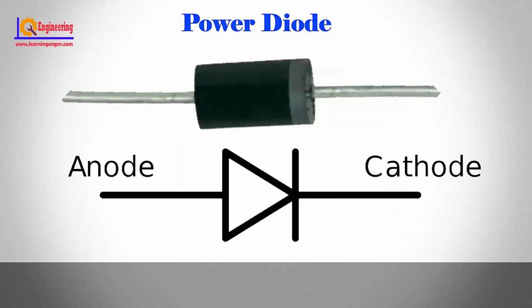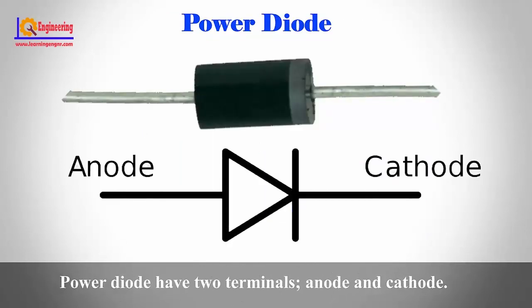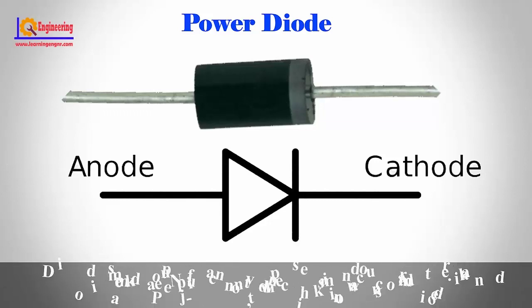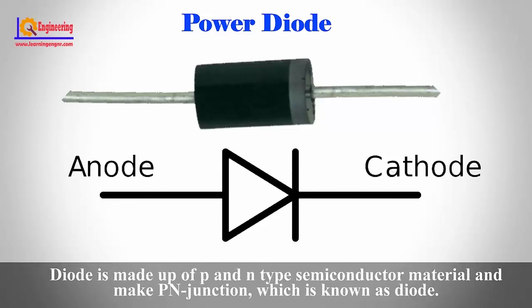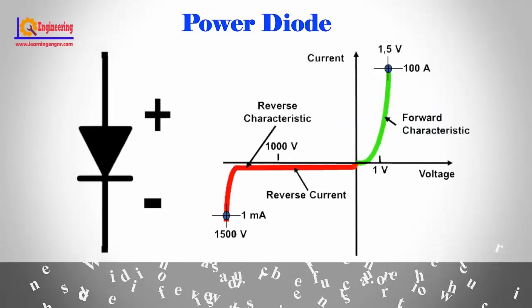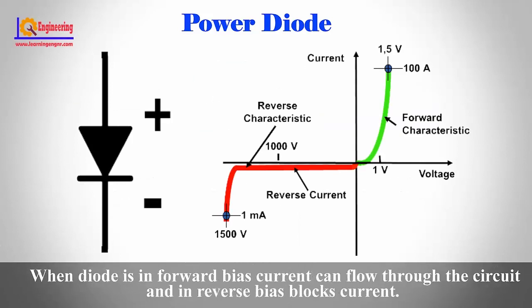Power diode has two terminals: anode and cathode. The diode is made up of P-type and N-type semiconductor material forming a P-N junction. When the diode is in forward bias, current can flow through the circuit; in reverse bias, it blocks current.